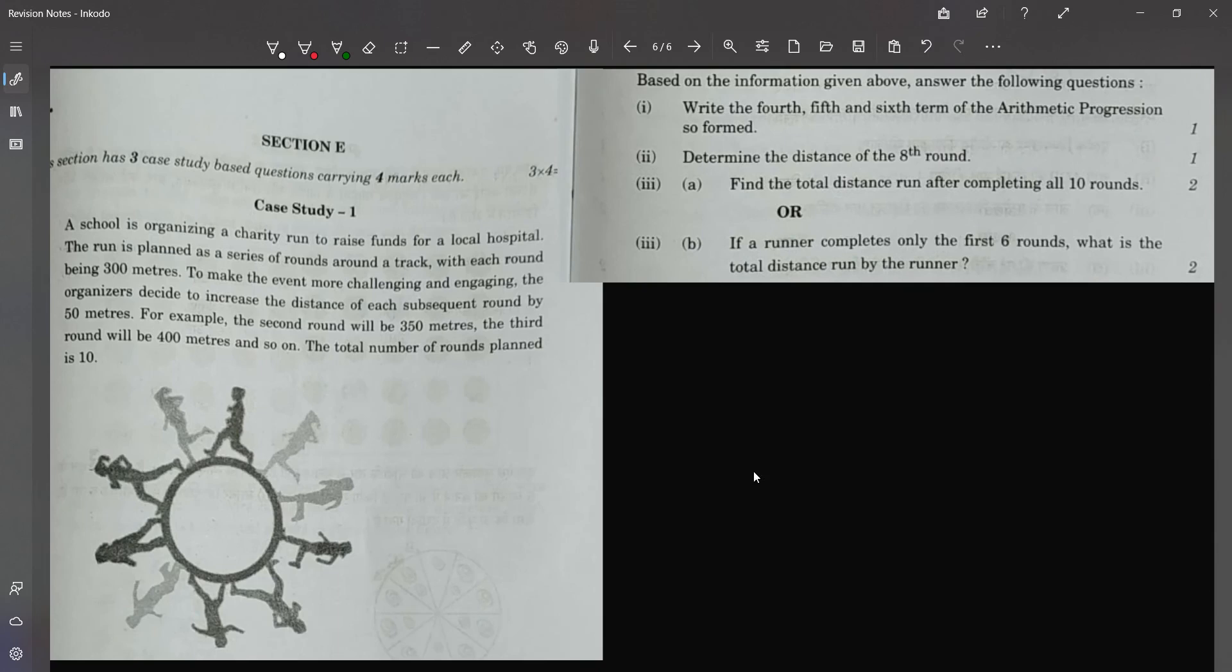A school is organizing a charity run to raise funds for a local hospital. The run is planned as a series of rounds around a circular track, with each round being 300 meters. To make the event more challenging and engaging, the organizers decide to increase the distance of each subsequent round by 50 meters.